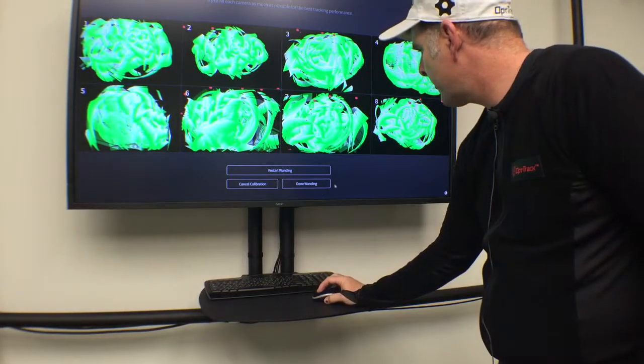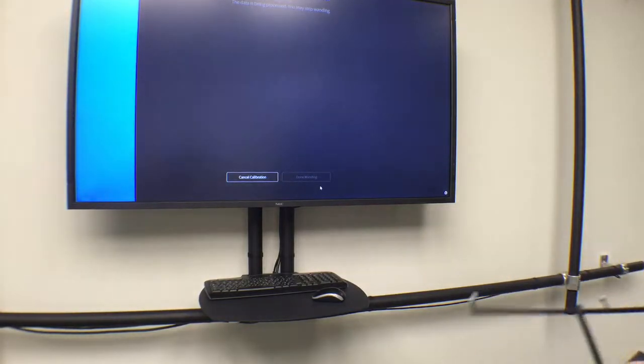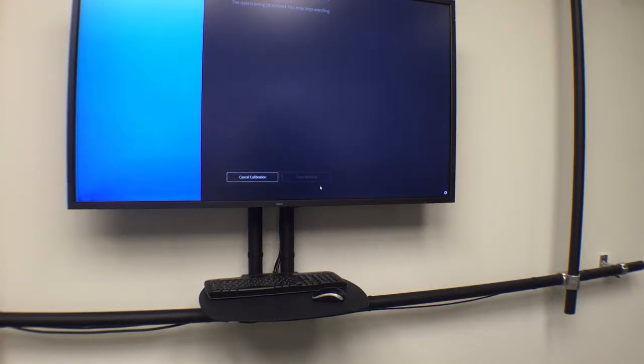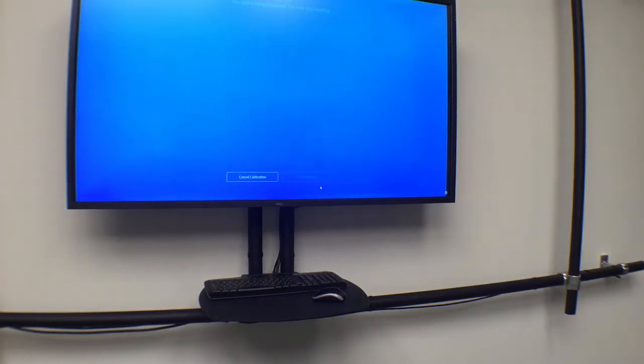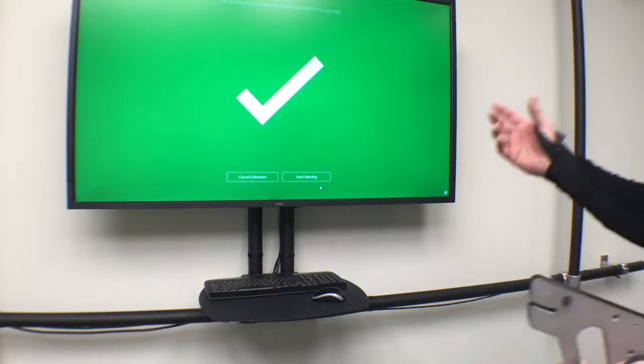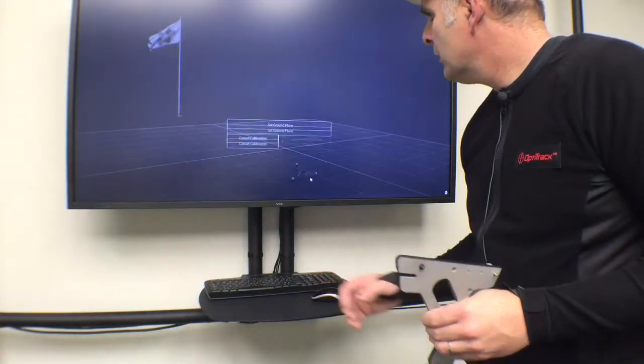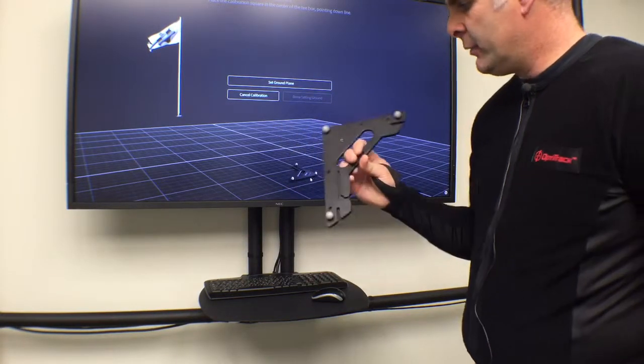Then what you'll do is simply press Done Wanding. That will take just a second or two and should take no more than 30 seconds. If you get hung up here and for some reason it's just not going through, you're going to want to restart the wanding. But this usually takes no more than a minute to calculate. Once you have that done, you'll see a big check mark that it was successful, and then you hit Done Wanding.